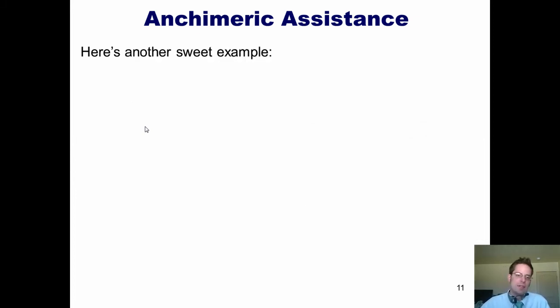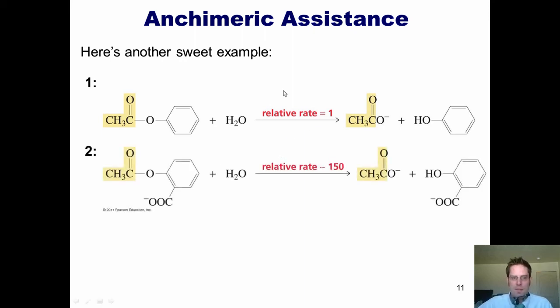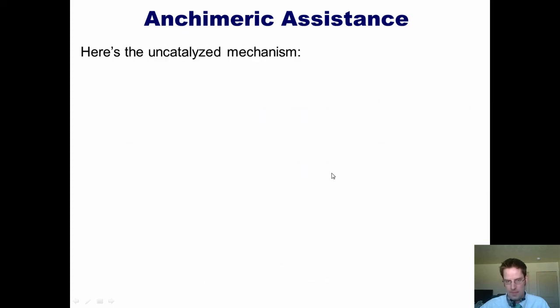Examples of anchimeric assistance abound. Here's another really cool one. When we run this reaction, which is hydrolysis of this ester, it proceeds forward with a certain reaction rate that we'll arbitrarily assign 1. I'm not really sure how long this reaction takes to go, but we're just going to give it an arbitrary number of 1. By comparison, this reaction, reaction 2, proceeds 150 times faster than reaction 1. The only difference, once again, between reaction 1 and reaction 2 is the presence of this carboxylate group here. That's it. This carboxylate group is ortho. This reaction runs 150 times faster. Why?